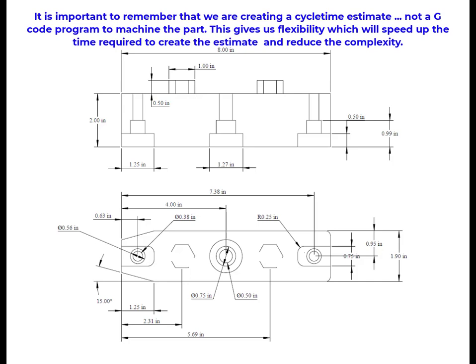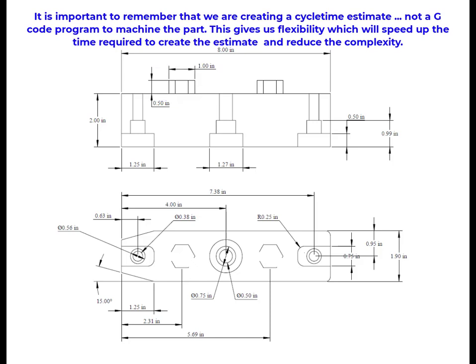For example, concerning the two hex bosses on the underside of the part, we will use a facing operation to machine the depth of 0.500 without considering the bosses. Then we will use a boss machining operation to calculate the time required to machine the bosses. We can do this because we are not actually creating a G-code program to machine the part, just calculating machining time. The time variations between accounting for the bosses when facing is immaterial and will not affect the cycle time in any significant way.